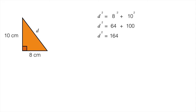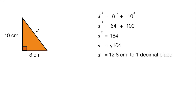Now we need to calculate the square root. D is the square root of 164 — you will need a calculator this time. It works out that D is 12.8 centimeters when we round to one decimal place.